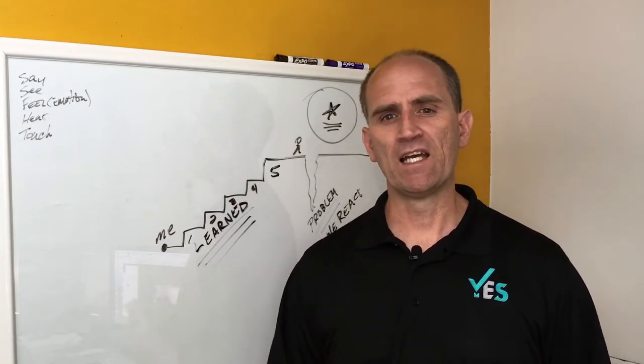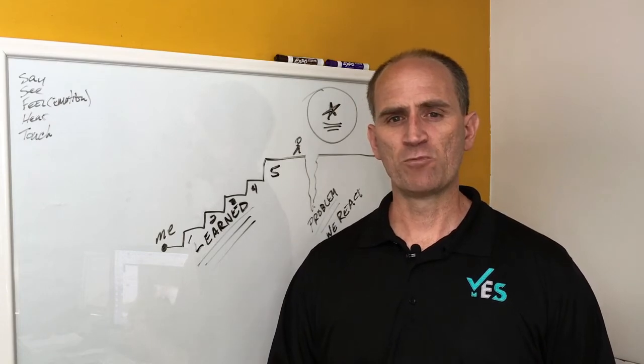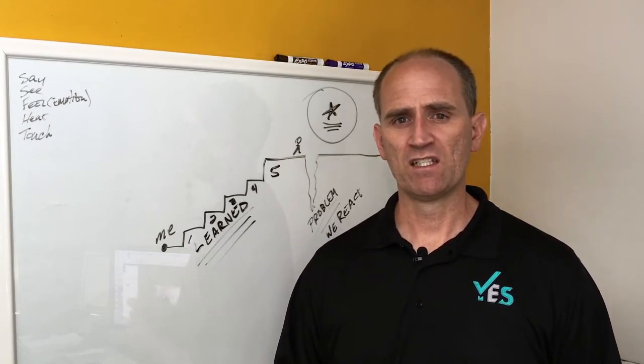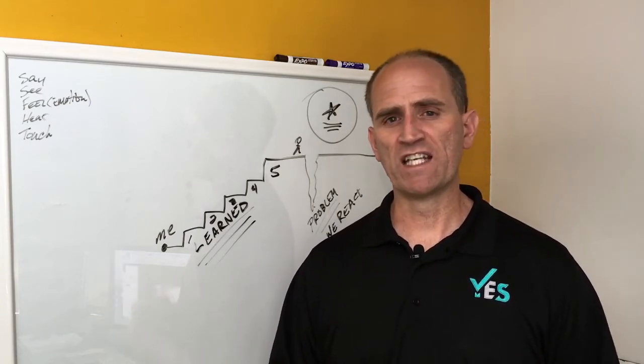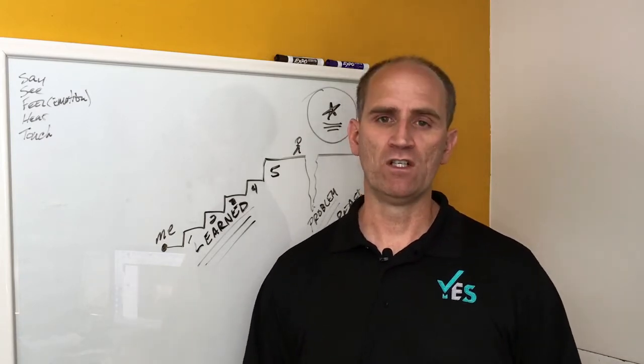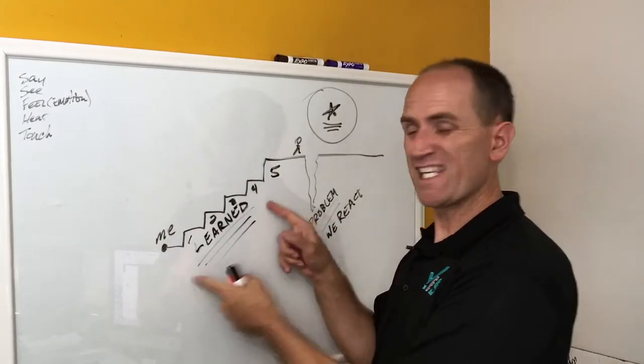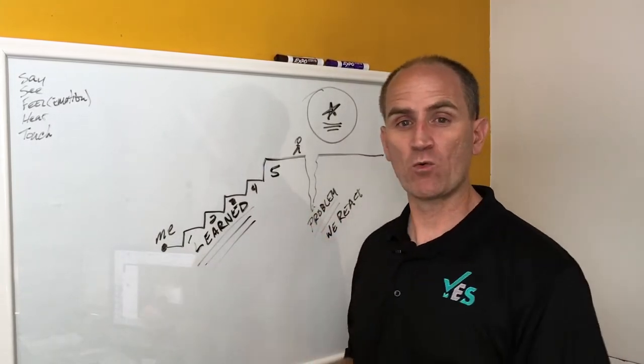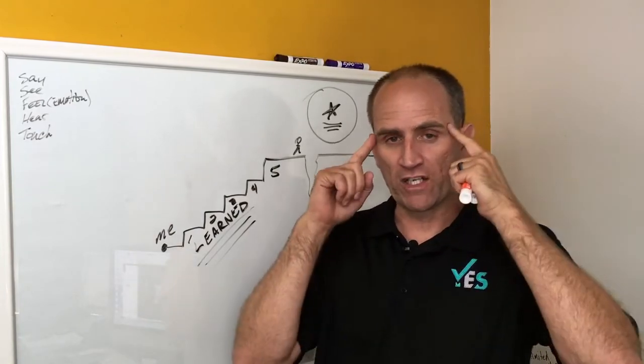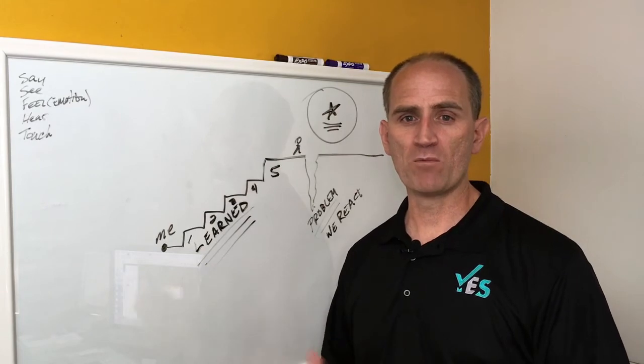And one of the things he said is, actually there's been a lot of things I've learned that I wouldn't have learned any other way. I thought how powerful, how powerful. Because now, the fact that he's realizing there's things that he learned that he wouldn't have learned any other way, he's now starting to go into a creative solution problem solving mode.